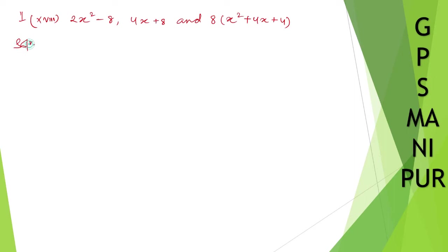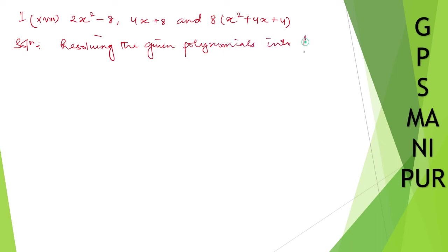Solution: resolving the given polynomials into factors. We have 2x squared minus 8. Take 2 common, so it will be 2(x squared minus 4). Since x squared minus 4 is x squared minus 2 squared, you can write it as 2(x minus 2)(x plus 2).